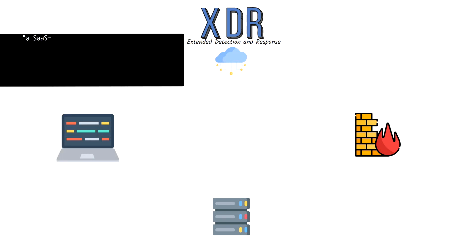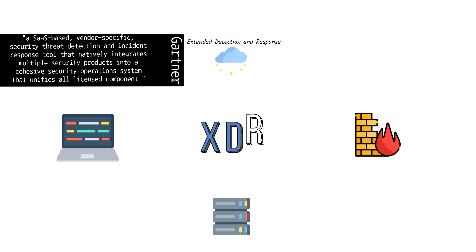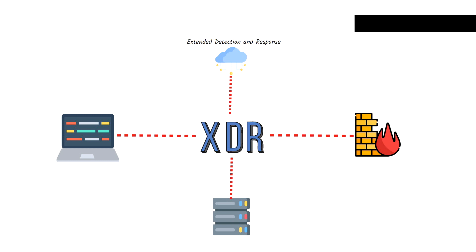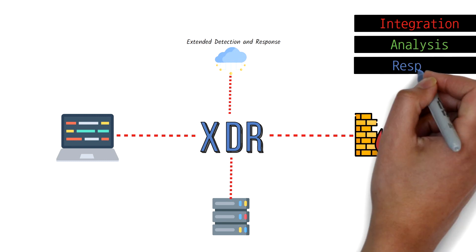Gartner defines XDR as a SaaS-based, vendor-specific, security threat detection and incident response tool that natively integrates multiple security products into a cohesive security operation system that unifies all licensed components. Put another way, XDR ingests data from multiple security products in order to correlate telemetry data that would otherwise be difficult to find manually. By having integration with these various products, XDR gives you the ability to respond to threats either automatically or manually. At a high level, there are three main components that make up XDR: the integration, the analysis, and the response.